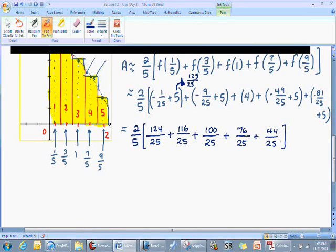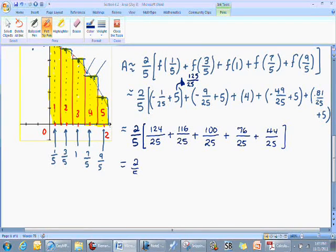And then from this point, you simply add the numerators together. We would see along the way, 124 and 116 would be 240, then 340, 340 added to 76. Making sure we don't make any mistakes, that would be 416. And then 416 added to 44 would end us at 460.